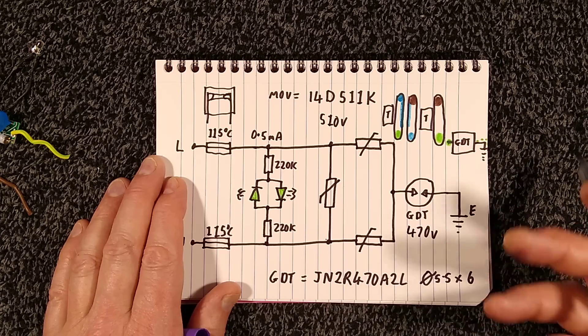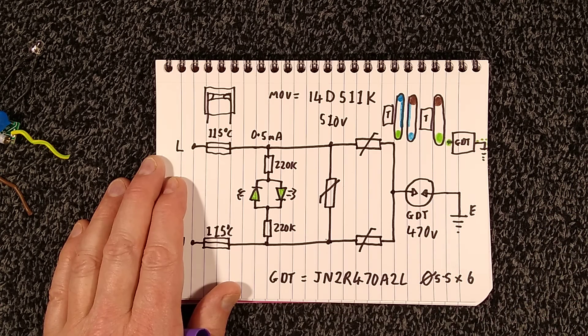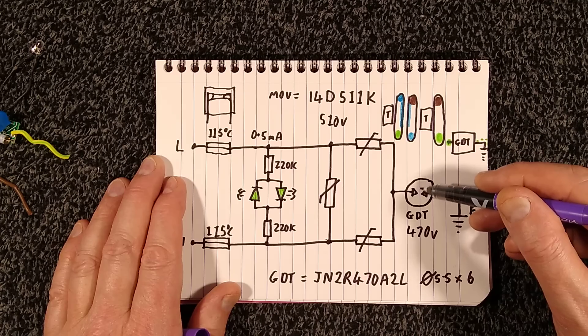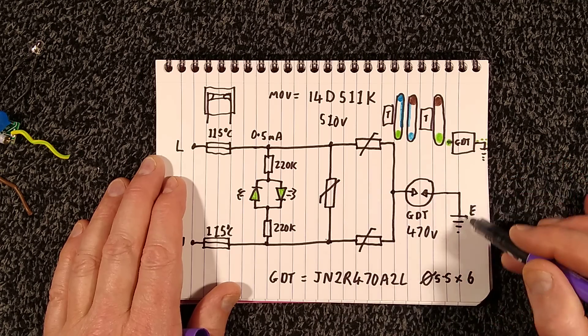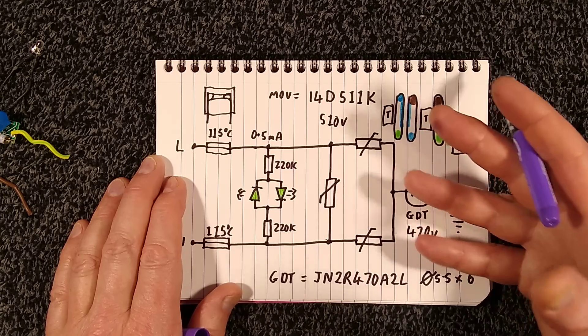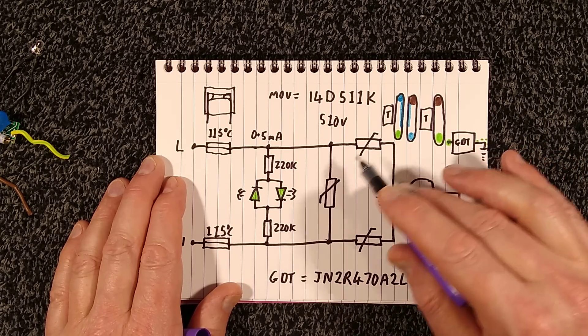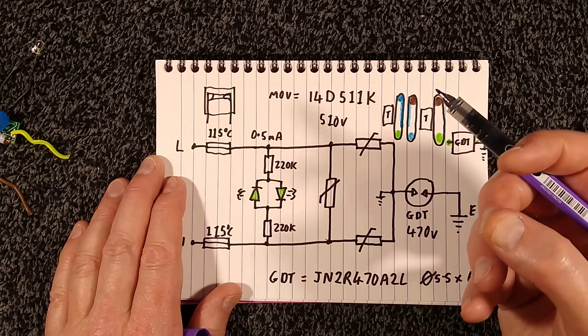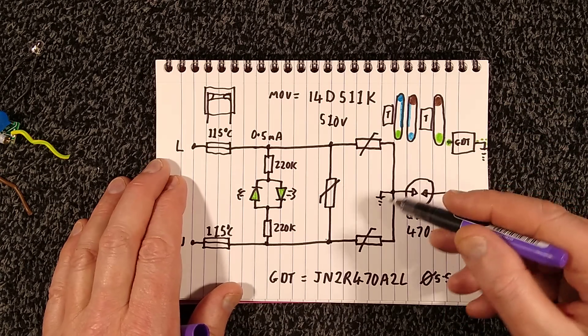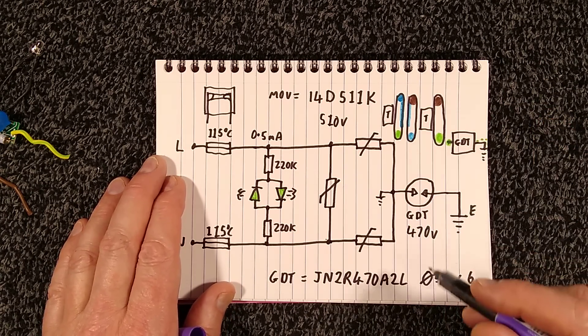And that provides that gap between these and earth because some of these surge devices simply have the earth connected here. And what that means is that as these fail, you can get increasing current flowing to earth and it means that if the earth goes open circuit somewhere, it poses a shock risk.